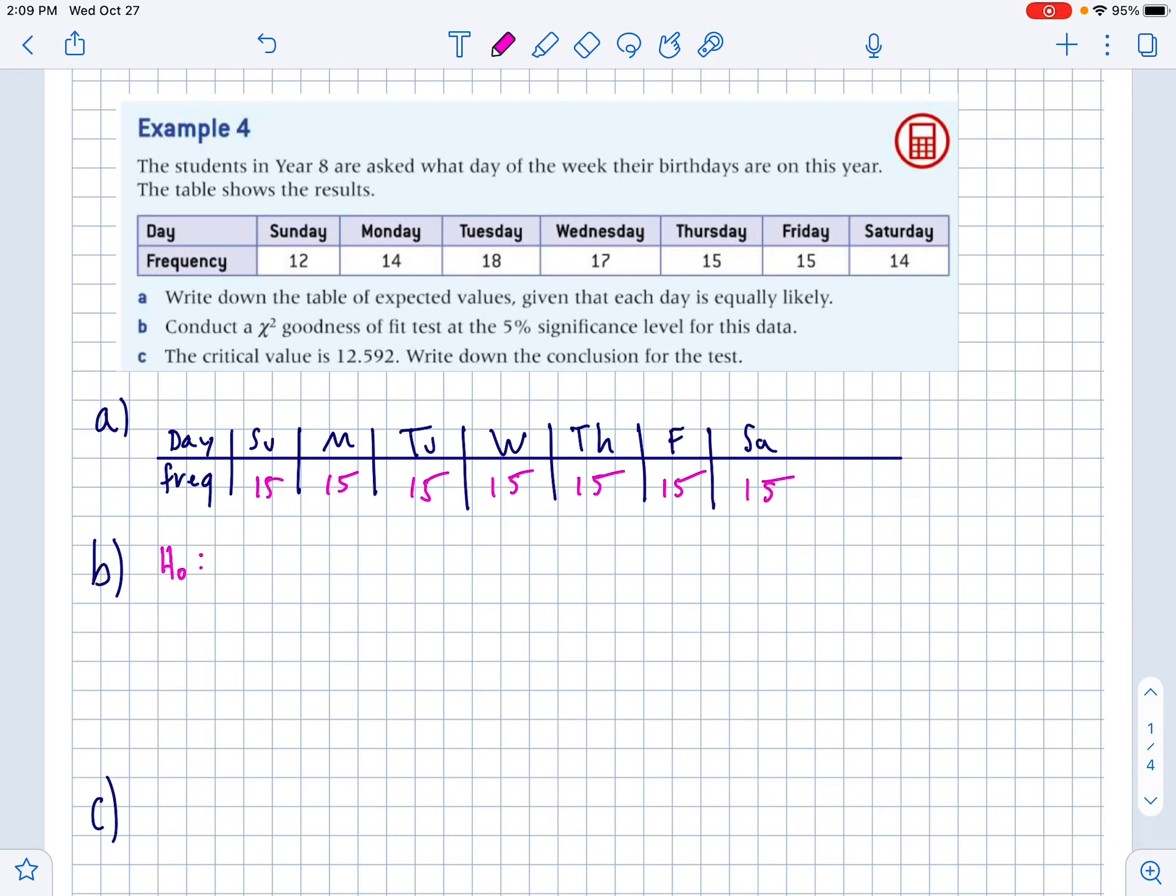So the chi-squared goodness of fit test is going to tell us if this data is different enough from this data that we could reject the null hypothesis and say that it doesn't satisfy a uniform distribution. So part B, conduct a chi-squared goodness of fit test. First, let's state the null and alternative hypothesis. So the null is the data satisfies a uniform distribution. But then if the differences are big enough, then the data would not have a uniform distribution.